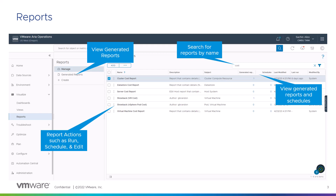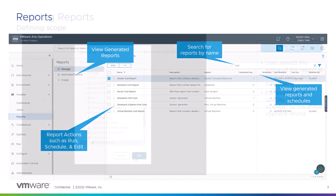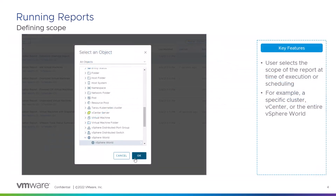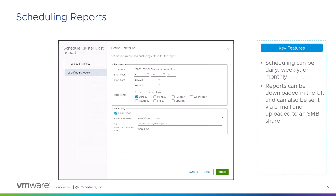You can view all the generated reports either under this tab or under this column. When running or scheduling a report, you have to select the scope of the report. You can either select a particular VM, a cluster, or the entire vSphere world. Reports can be scheduled to run daily, weekly, or monthly. In addition to being available for downloads within the UI, reports can also be sent via email and uploaded to an SMB share.